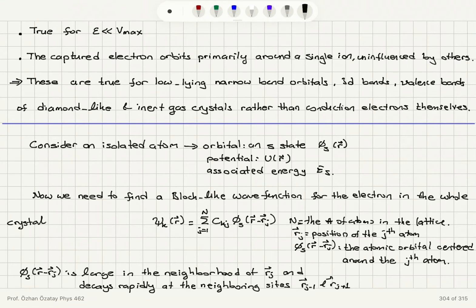It is true for low-lying energy levels. Epsilon should be much less than Vmax. The captured electron orbits primarily around a single ion.